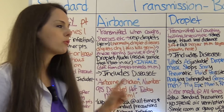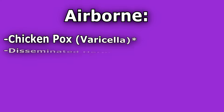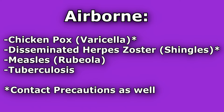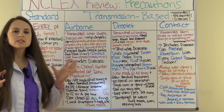Diseases included in airborne precautions are: chicken pox (varicella), disseminated herpes zoster (shingles — a widespread infection), measles, and tuberculosis. It's important to note that chicken pox and disseminated herpes zoster patients will also be in contact precautions along with airborne precautions.